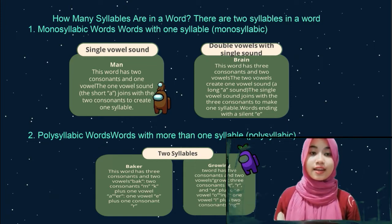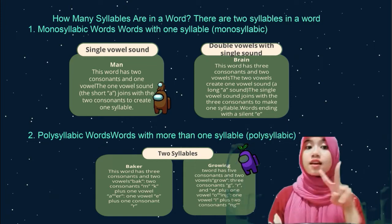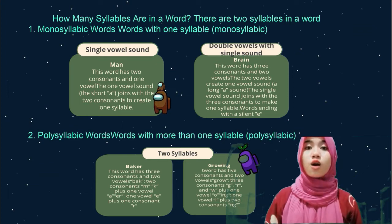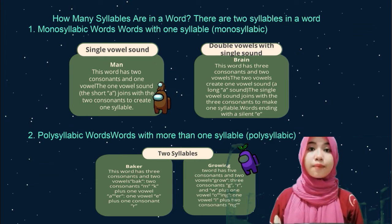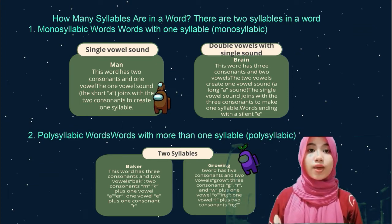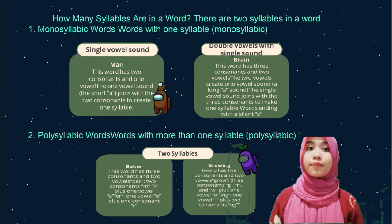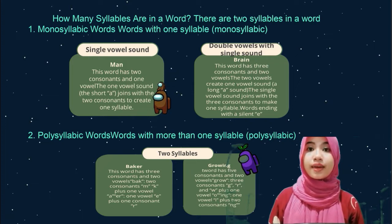Words ending in silent E are also considered. Then there are polysyllabic words — words with more than one syllable.